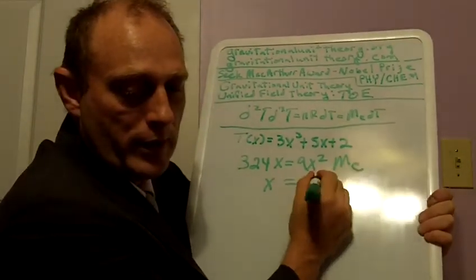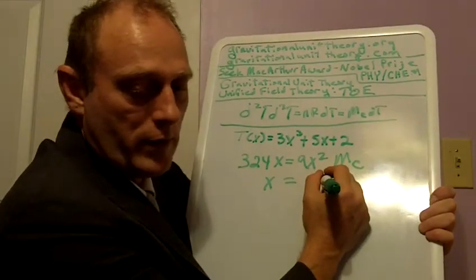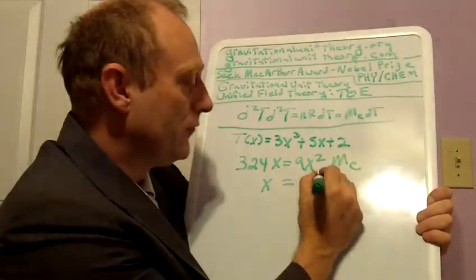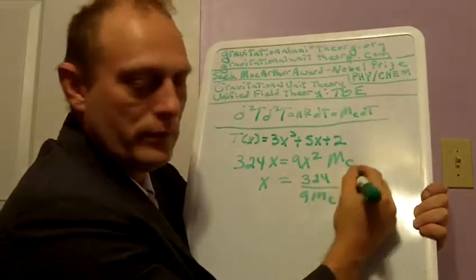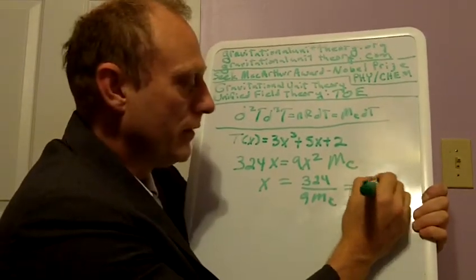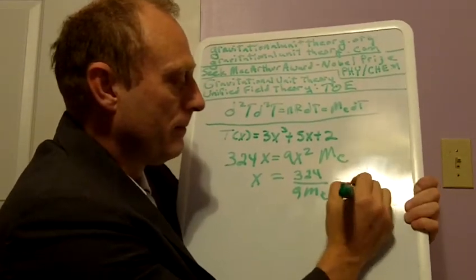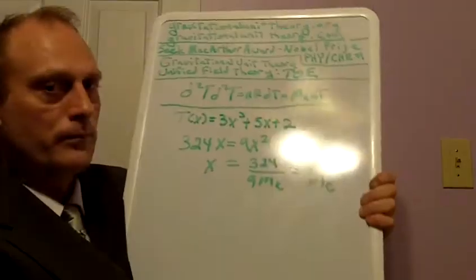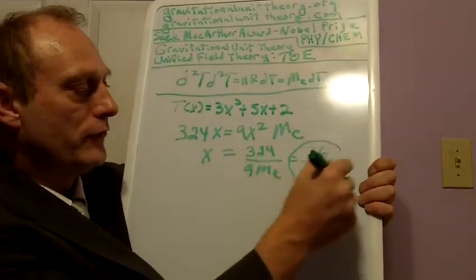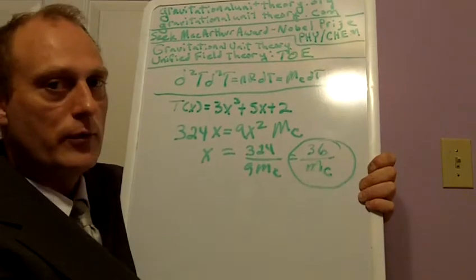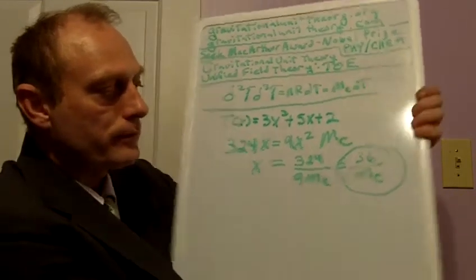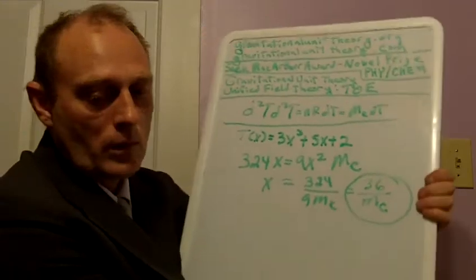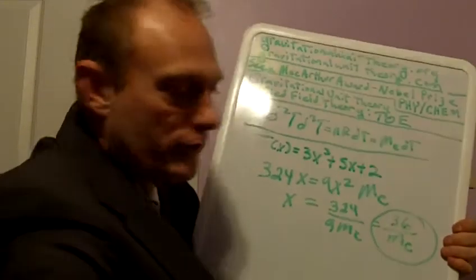The second term I omit for being insignificant to the equation, and it simplifies the math greatly when I do this. So when I do that, what I get is 324x equals 9x squared times mc, and x ends up being 36 over the constant mass. So this is our answer here — 36 over the constant mass. This is the end of step one.